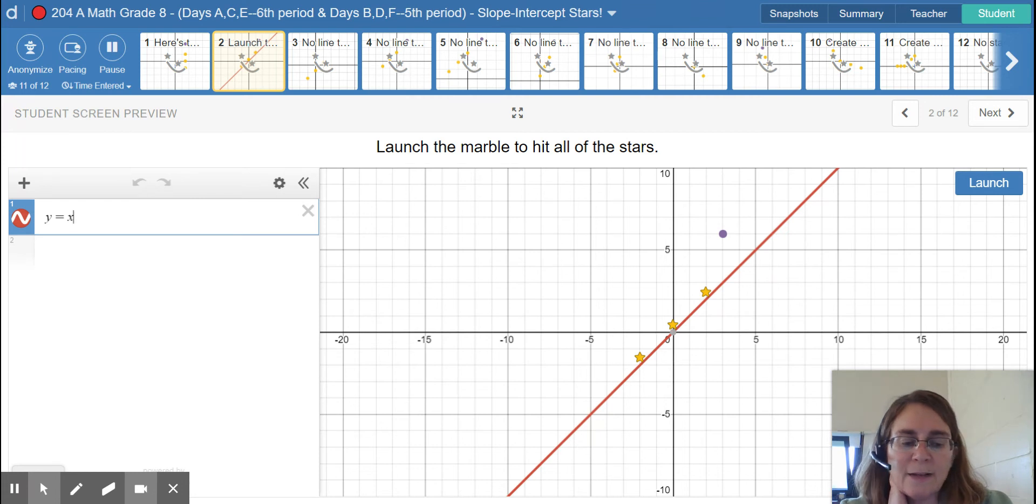Y equals x is the same as y equals 1x, so the slope is 1 and the y-intercept is 0. How do we figure that out? If you look at these stars and you do rise over run: 1, 2, and 1, 2.